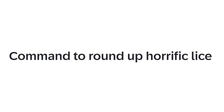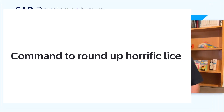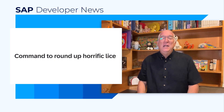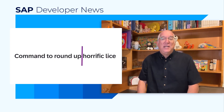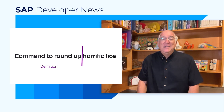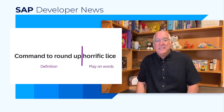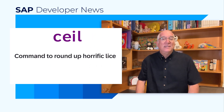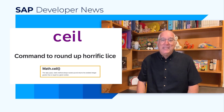For example, here's a clue: 'command to round up horrific lice.' Sounds a little weird, but you can divide it into two parts. 'Command to round up' is the definition — any ideas what that could be? The second part, 'horrific lice' — horrific indicates it's an anagram of lice. You can rearrange the letters in 'lice' to spell 'ceil', a JavaScript method to round up a number. Pretty cool!